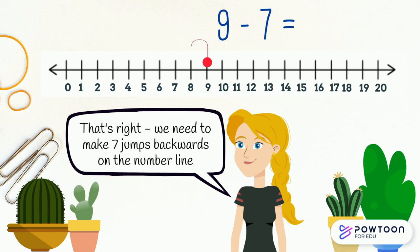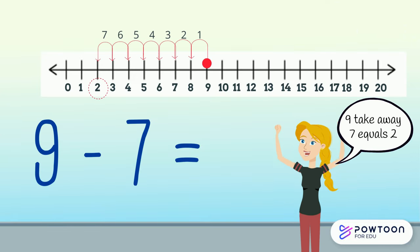That's right, it's seven. One, two, three, four, five, six, seven. Well done. So nine take away seven equals two.